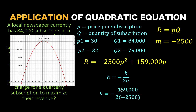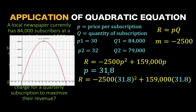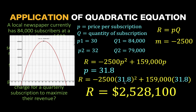Therefore, H equals negative 159,000 divided by 2 times negative 2,500, which gives us H equals 31.8. This value of 31.8 is the price that will give us the maximum revenue. So at P equals 31.8, we can compute R by substituting 31.8 into the revenue equation. This gives us R equals 2,528,100. So the point (31.8, 2,528,100) is the coordinate of the vertex of this parabola. At a price of $31.80, the maximum revenue is $2,528,100.